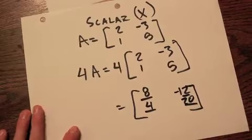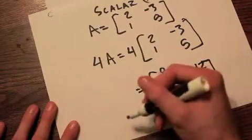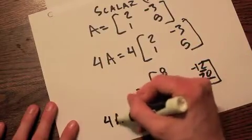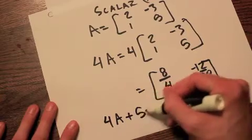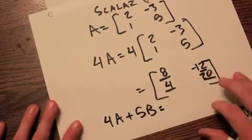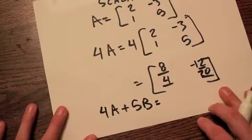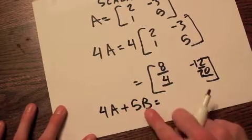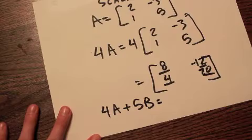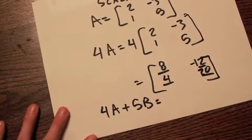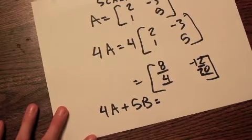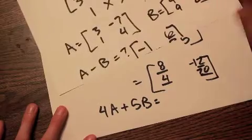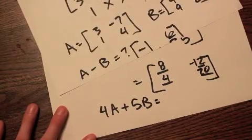This can be used, in essence, if you wanted four A plus five B, if we had a matrix B. You can use scalar multiplication along with addition of matrices. This will be the brunt of your homework and the majority of your next test. And that is operations on matrices.